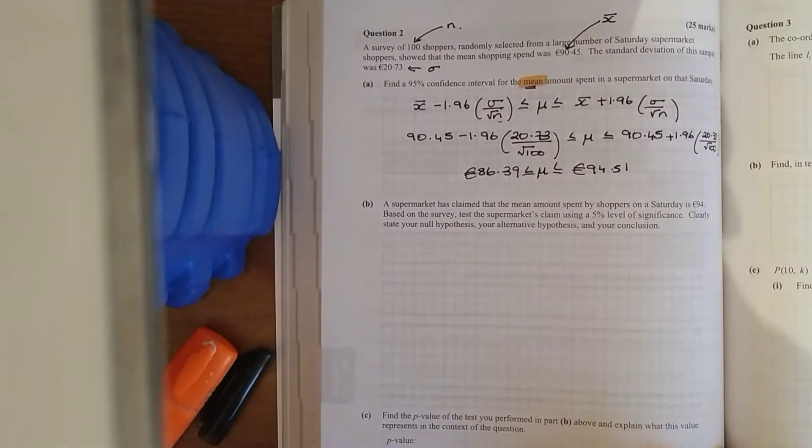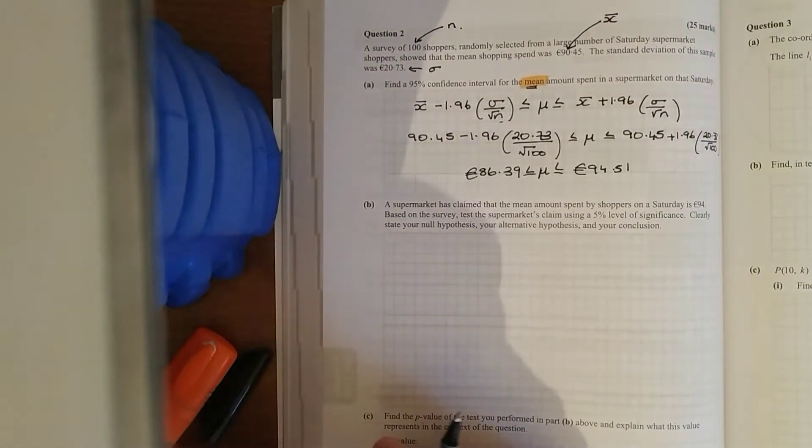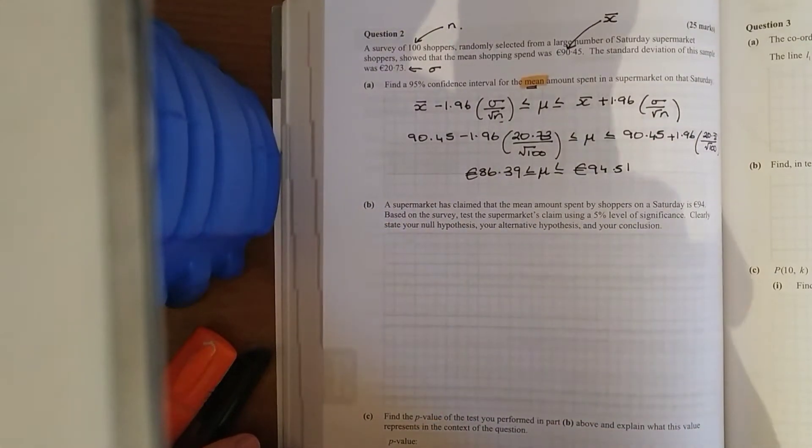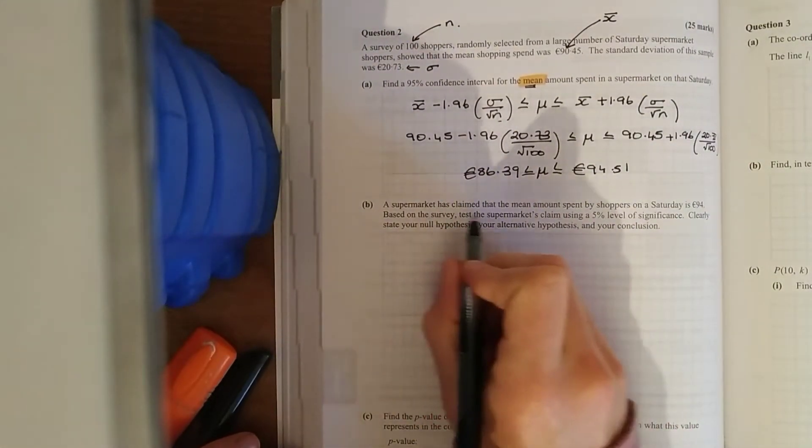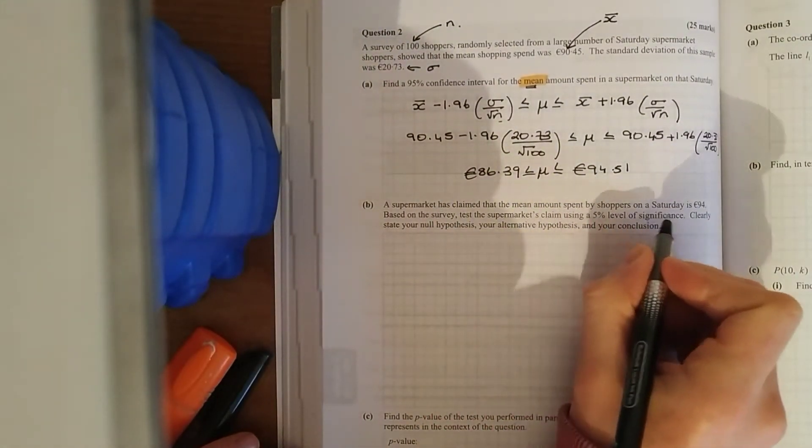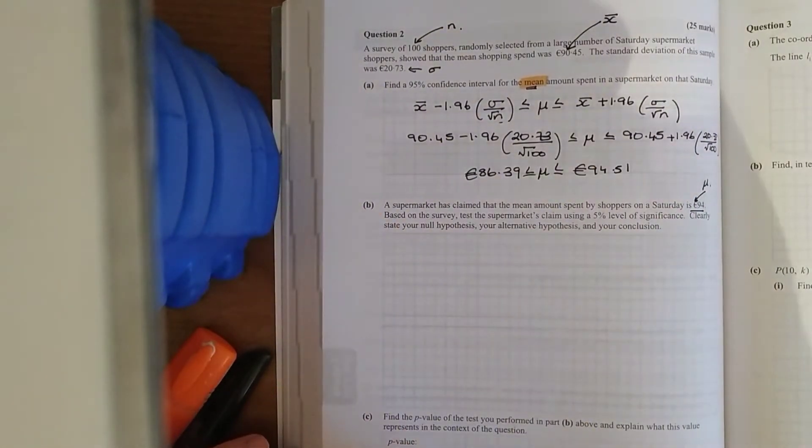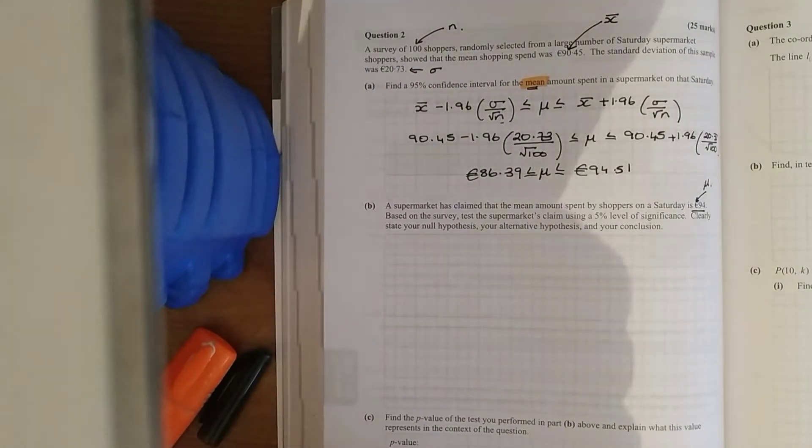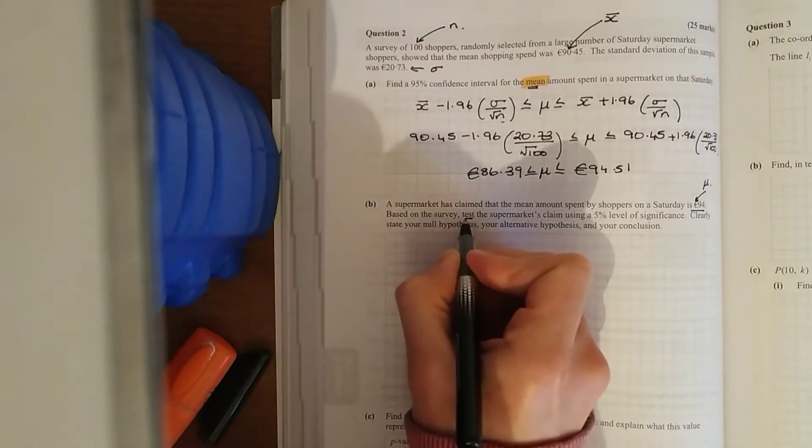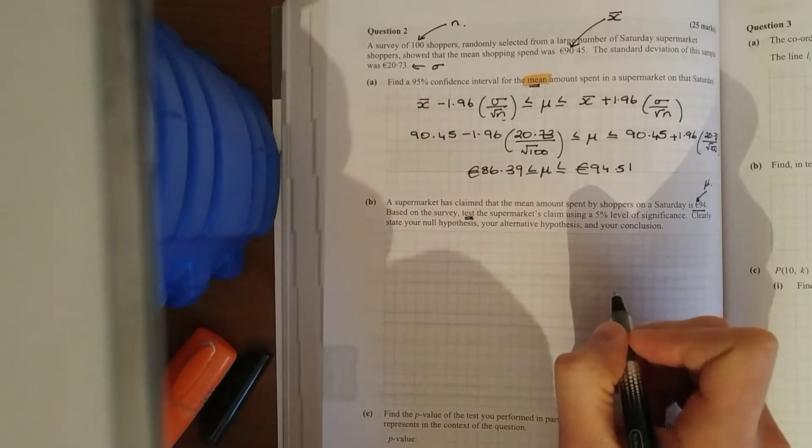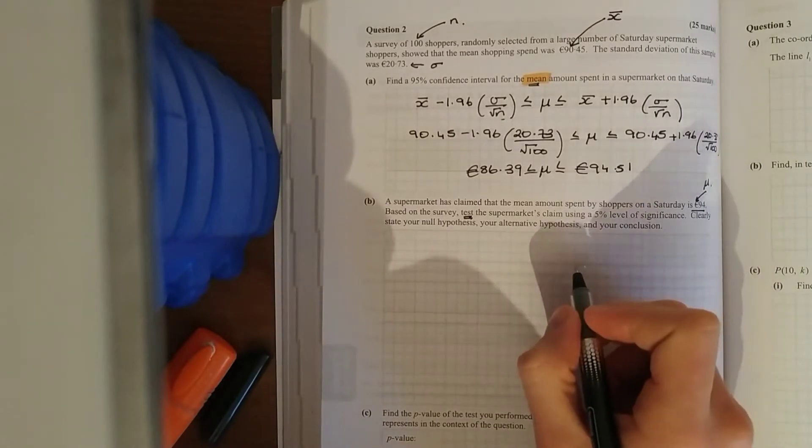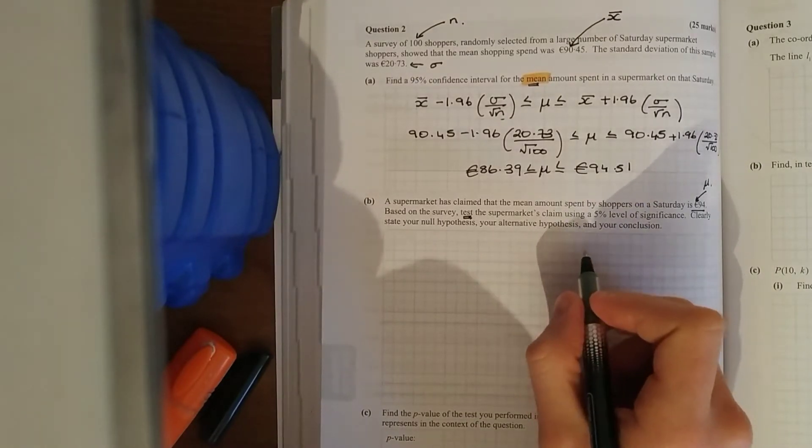Now the next one. This is your null hypothesis, your alternative hypothesis, hypothesis testing. So supermarkets claim that the mean amount spent by shoppers is 94. So that's their claim. That's their population mean. That's their statement of no change. Based on a survey test, your hypothesis test, used at a 5% level of significance, clearly state your null and your alternative and your conclusion.